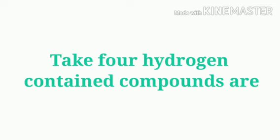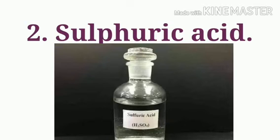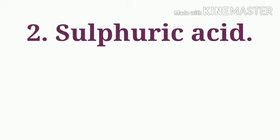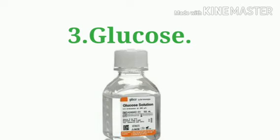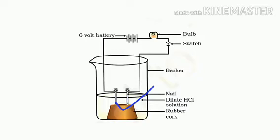Take four hydrogen containing solutions such as hydrochloric acid, sulfuric acid, glucose, and alcohol. Fix two nails on a cork and place them in a 100 ml beaker. Connect these nails to the two terminals of a 6 volt battery, to the bulb, and to the switch.